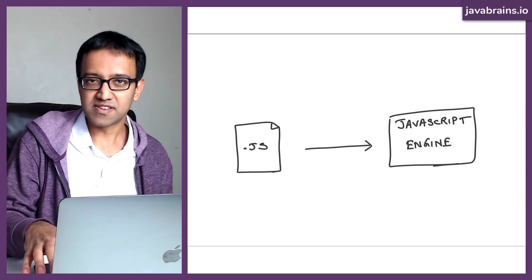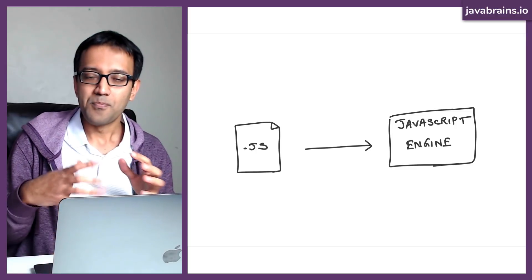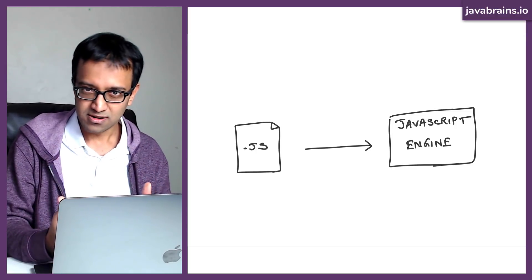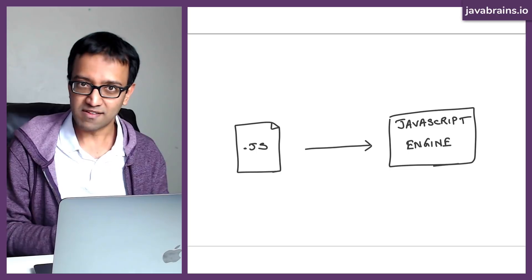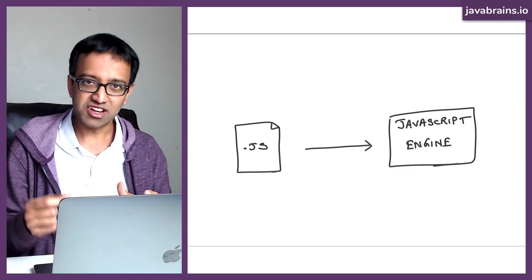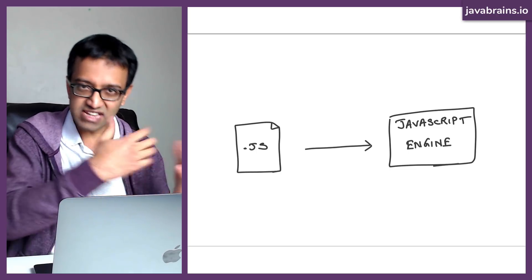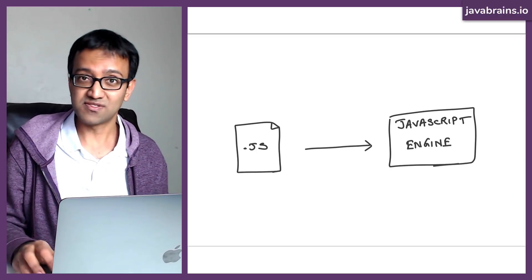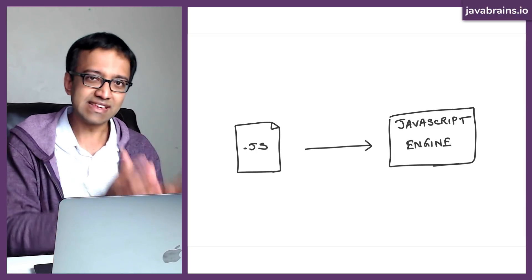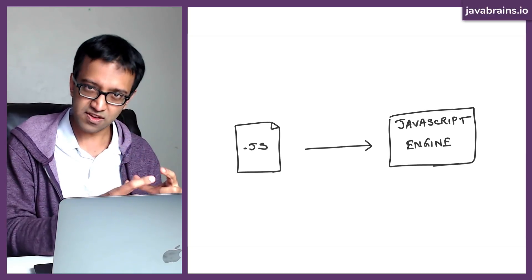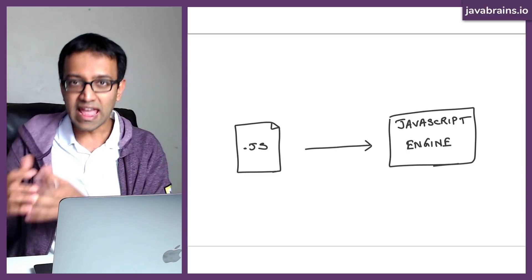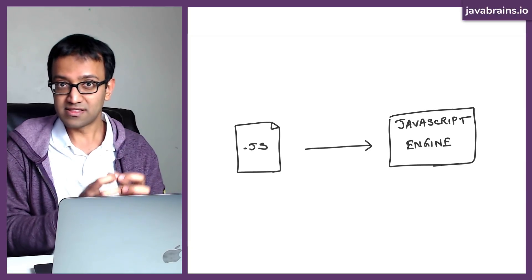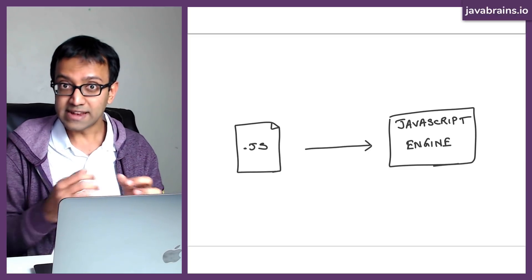What the creators of JavaScript did was build this JavaScript engine into the browser. So when the browser encounters a JavaScript file, it passes that file to the JavaScript engine and says: execute this. The engine then runs that JS file. This is the difference between the syntax — which is the contents of the JavaScript file — and the engine or the runtime, which takes the code and executes it.